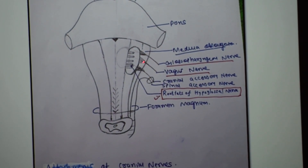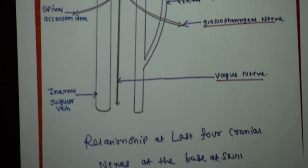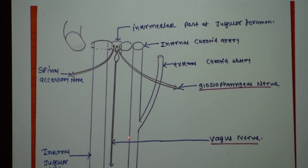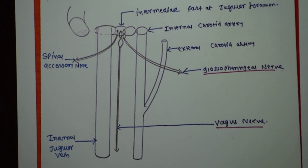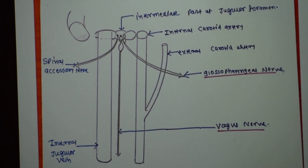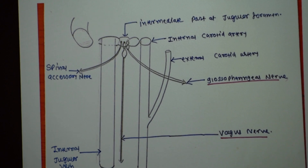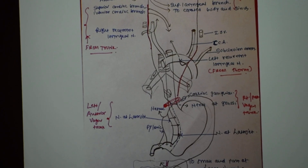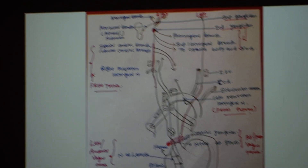The vagus nerve then passes through the jugular foramen, through the intermediate part of the jugular foramen. It passes vertically straight down between the internal jugular vein and common carotid artery through the carotid triangle. Many important cranial nerves are related with the carotid triangle, and the vagus nerve is one of them.